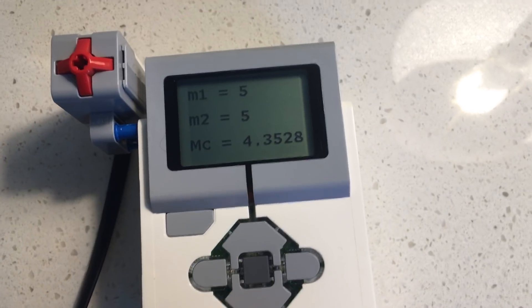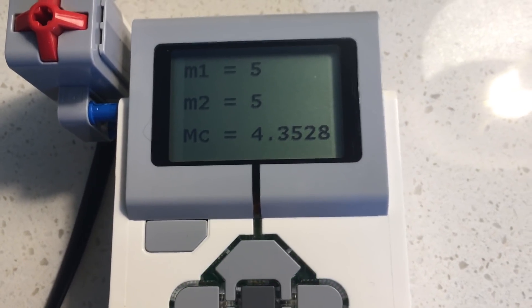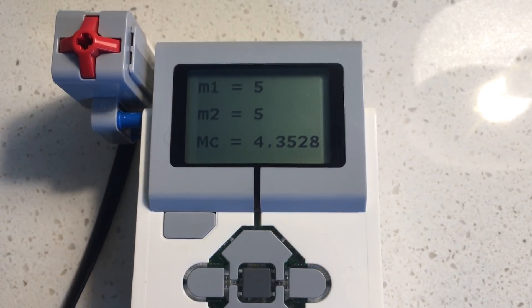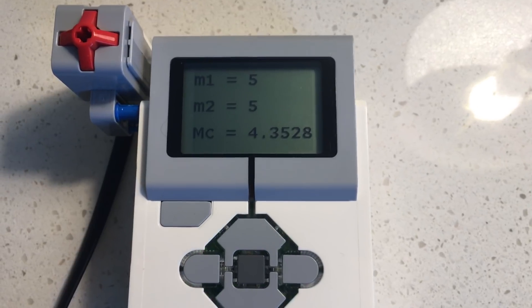Okay, and so there you see it's recomputed the chirp mass, so the chirp mass is heavier, and the sound should sound proportionately different. It's also much shorter, as expected.